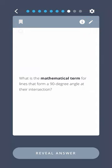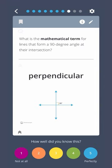What is the mathematical term for lines that form a 90-degree angle at their intersection? Perpendicular.